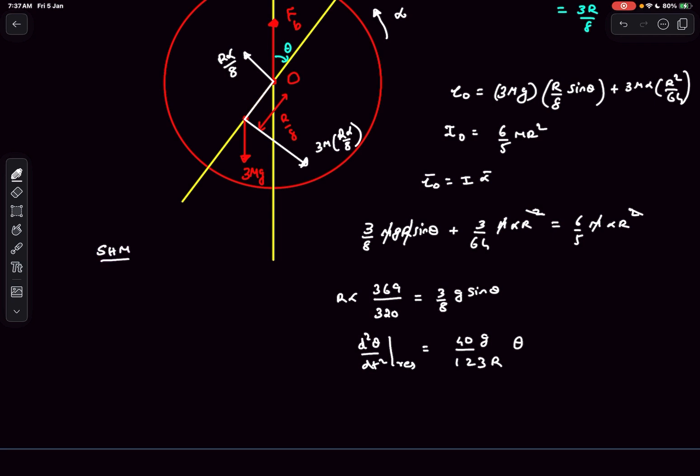The time period of oscillation for an SHM is simply 2 pi by omega, and omega is simply the square root of this term. This is our final expression for the time period of oscillations. That was it for this video. If you enjoyed, do like and subscribe to the channel. Thanks for watching.